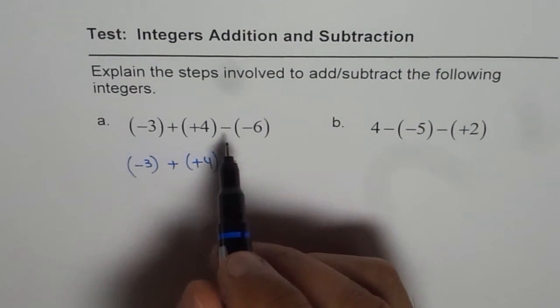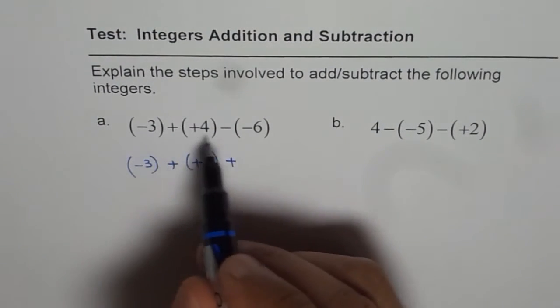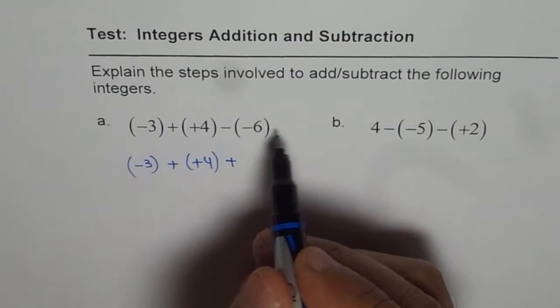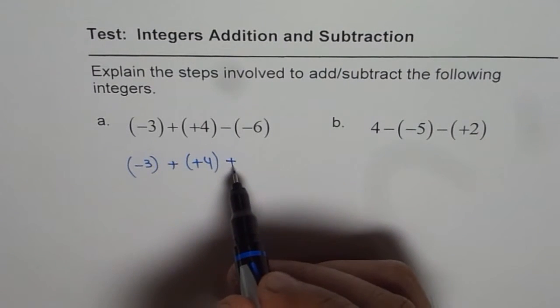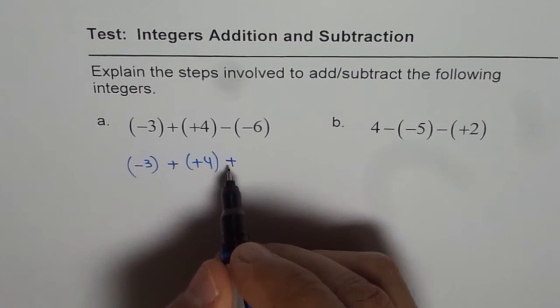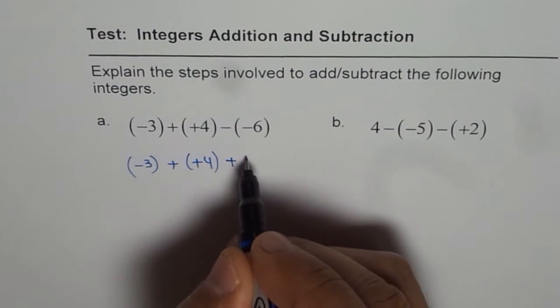Minus means going left, right? Take away. And this is in the opposite direction. So, opposite of take away is addition, right? So, it really becomes plus of plus six.